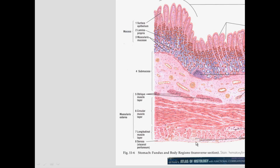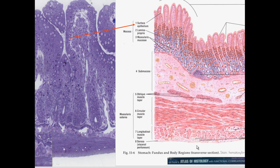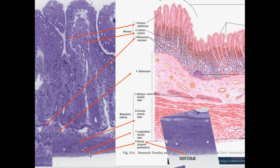Looking at the small intestine, we see simple columnar epithelium on the surface with absorptive cells and goblet cells. Supporting the epithelium is the lamina propria, below which is the muscularis mucosa with smooth muscle layers. Below the mucosa we have circular smooth muscle, then longitudinal muscle, and then the serosa — a little connective tissue and then the mesothelium lining.